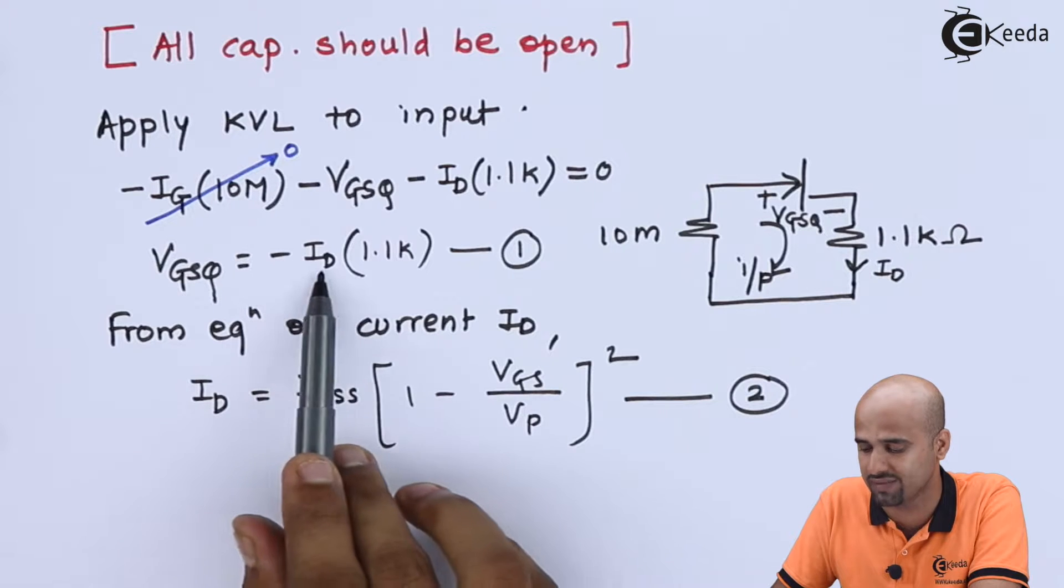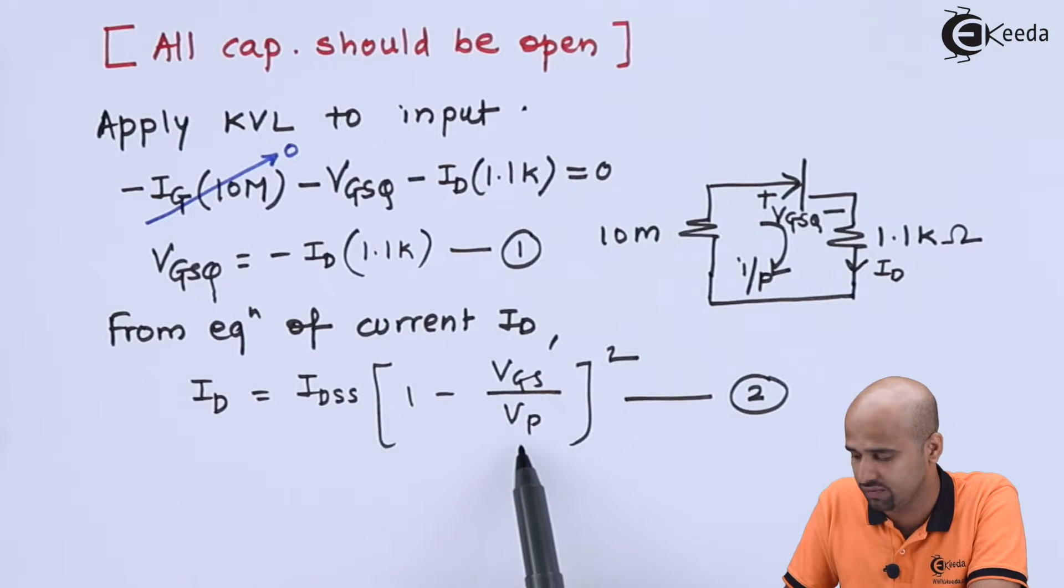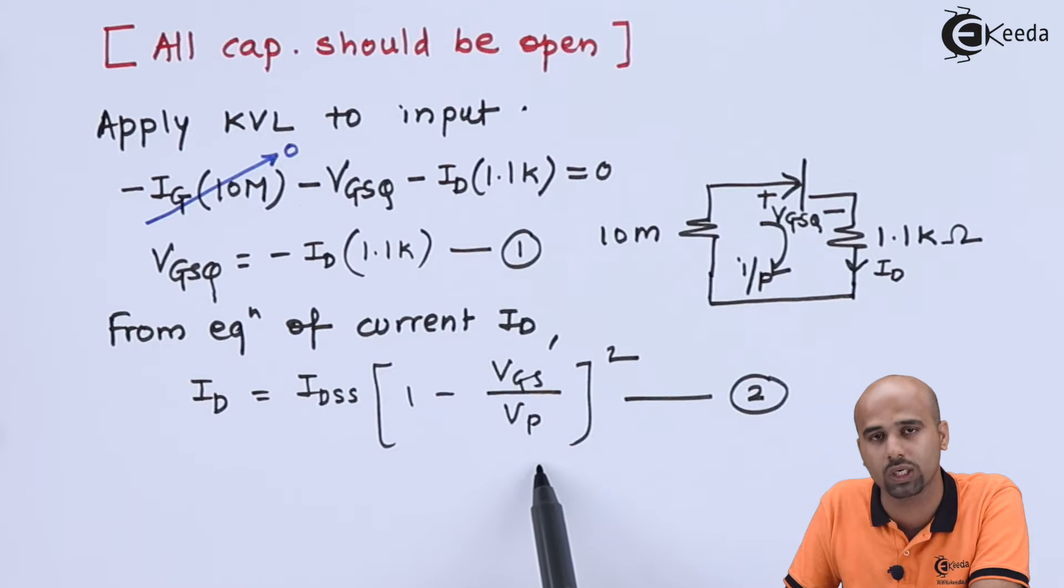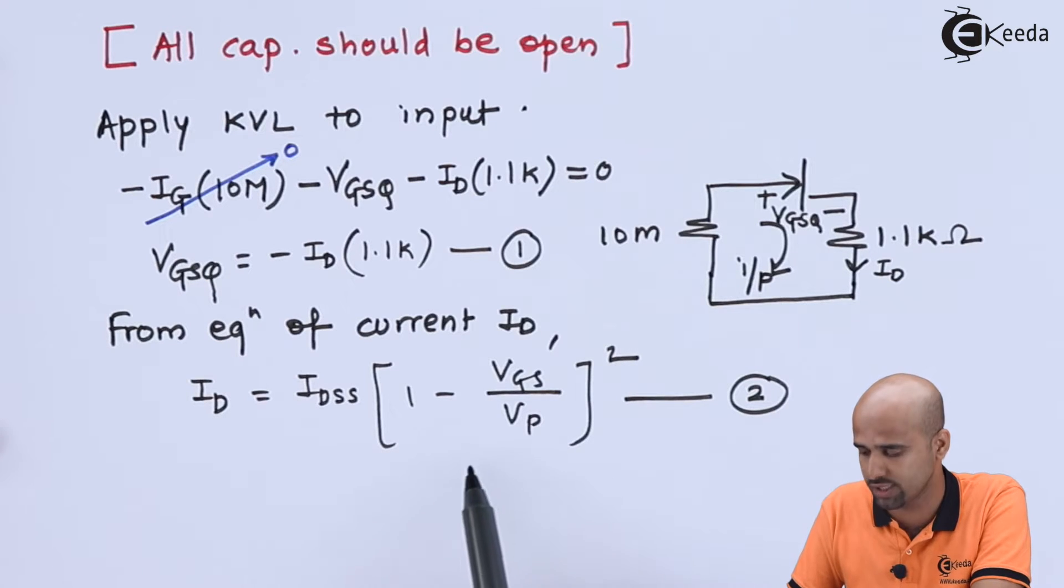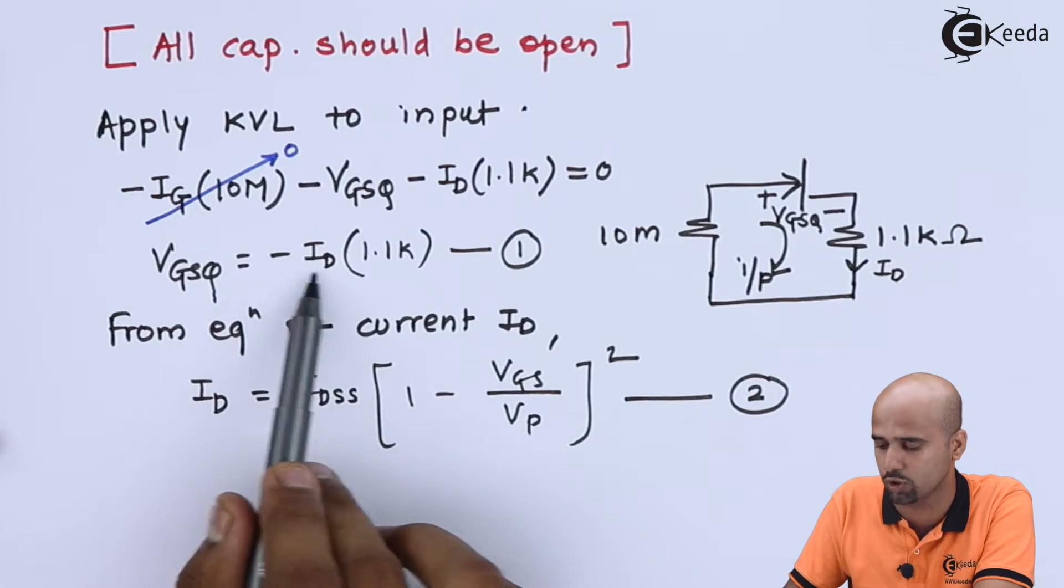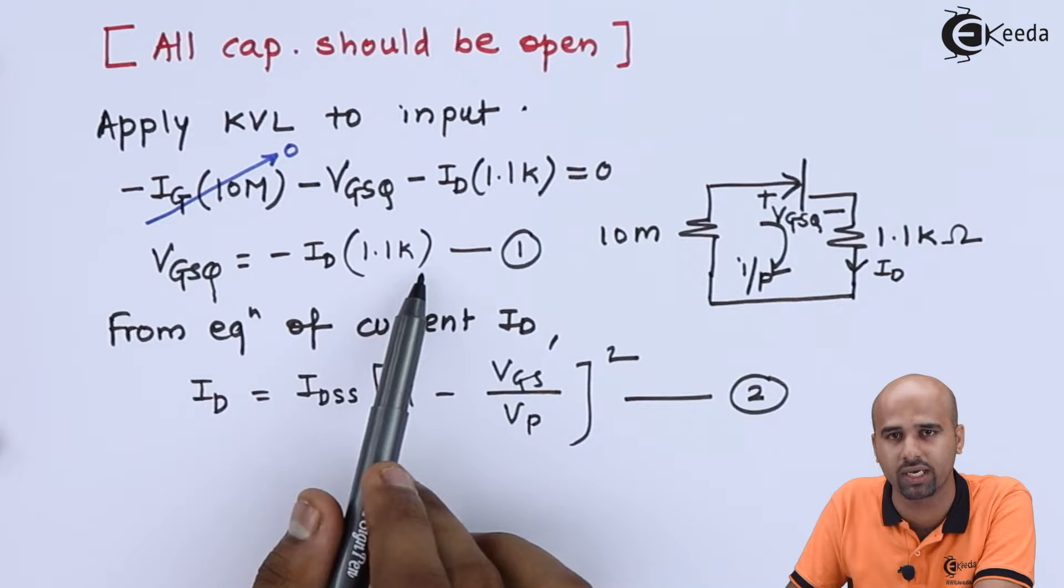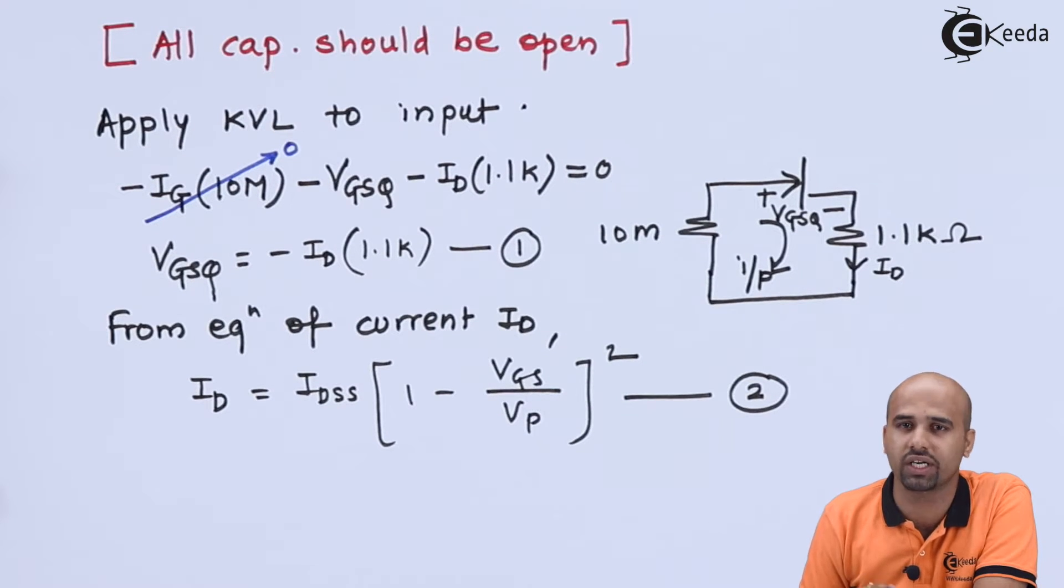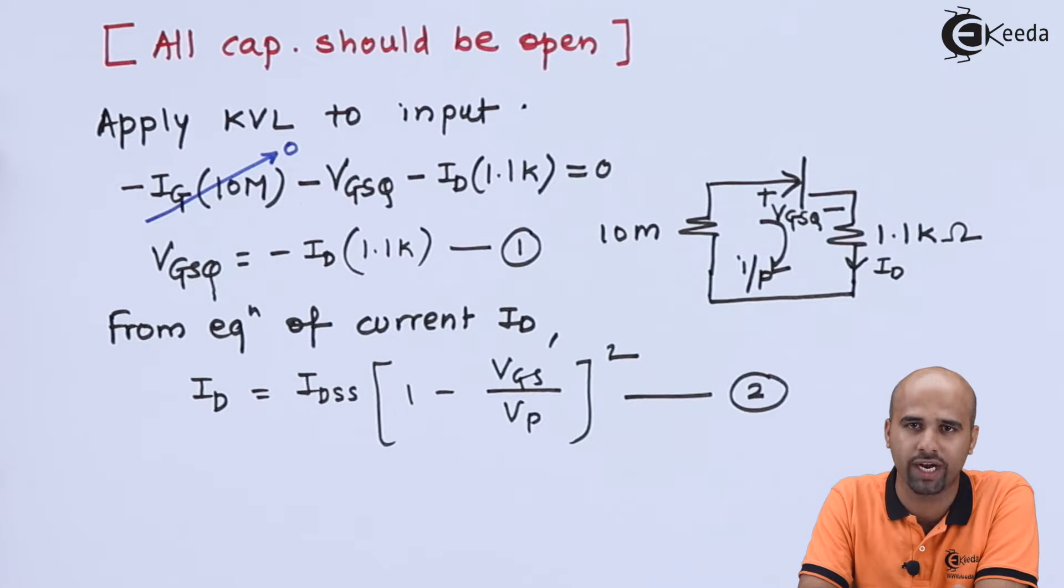So this VGS is nothing but minus of ID into 1.1k. VP is negative, that is minus 4 which is given. IDSS is given 6 milliampere and this is how we will be getting whole quadratic equation. So just try to convert this complete equation by putting this value VGS is equal to minus ID into 1.1k, we will get the quadratic equation. Reach towards the quadratic equation and then we will find the roots of the quadratic equation. Just pause the screen and do that.